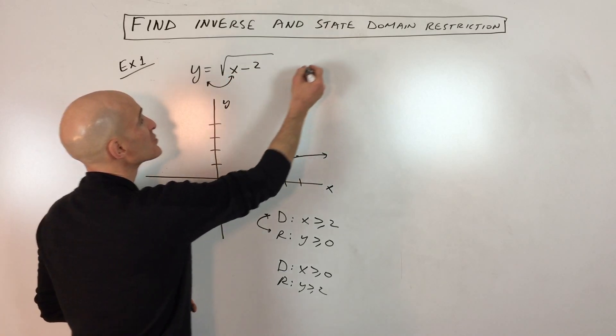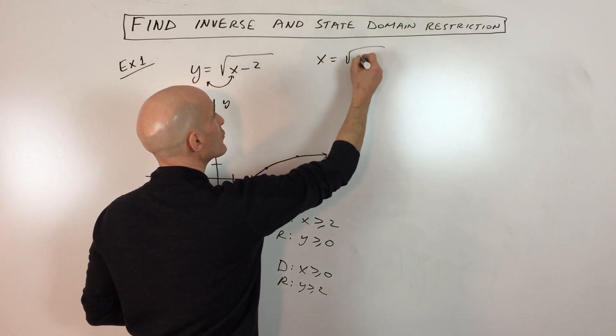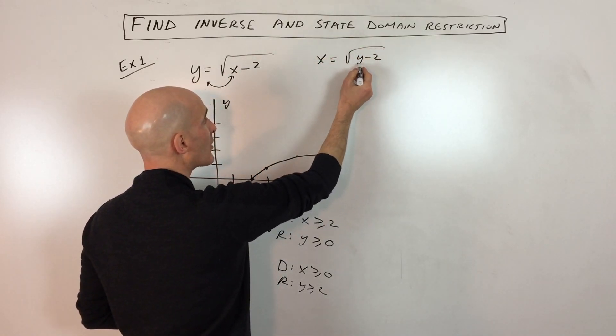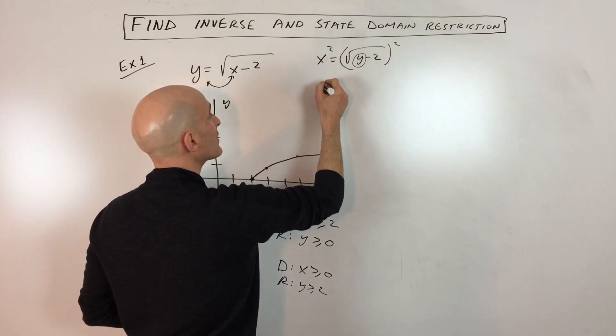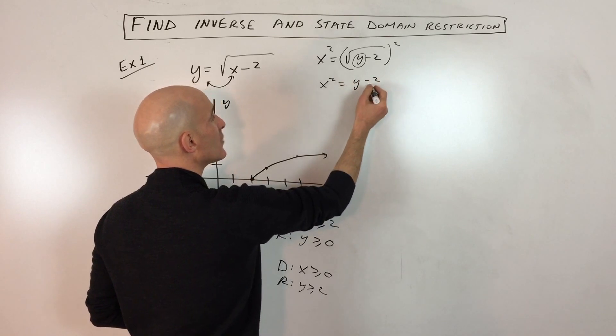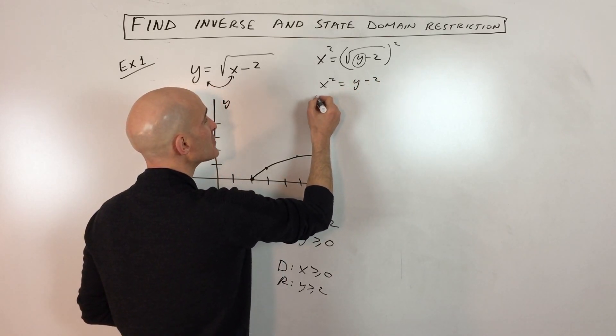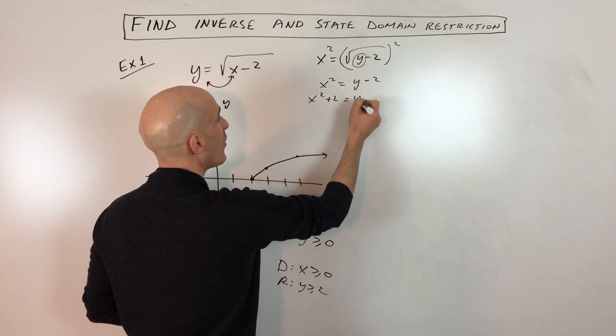So we're going to switch the x and the y. So now we have x equals the square root of y minus 2. I want to solve for this y right here. So I'm going to square both sides. So I get x squared equals y minus 2. And I'm going to add 2 to the other side. So that's x squared plus 2 equals y.